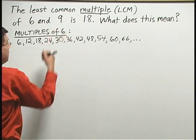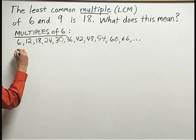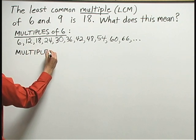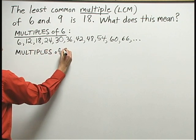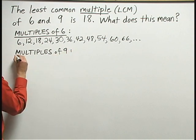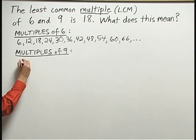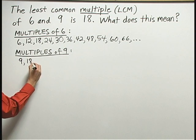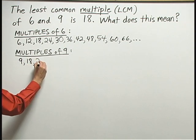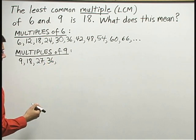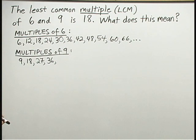Now, let's also look at the multiples of 9. What we're going to do is take 9 times each of the counting numbers. 9 times 1 is 9. 9 times 2 is 18. 9 times 3 is 27. 9 times 4 is 36. I bet you know most of these multiples already from your multiplication facts.